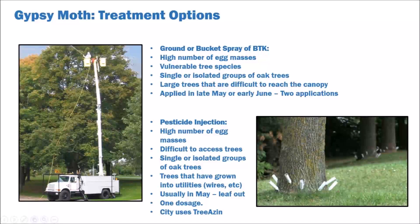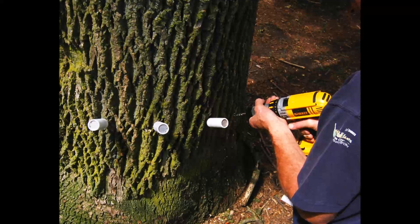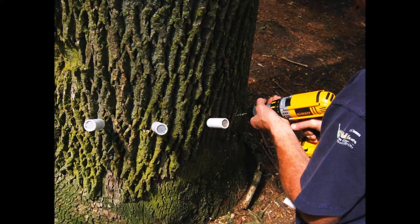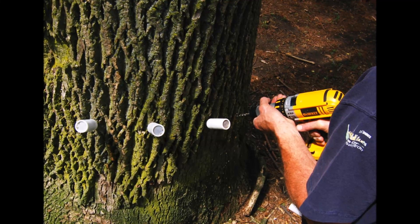Pesticide injections are another option available for control of gypsy moth. Timing is critical and also needs to be done by qualified personnel. Injection needs to be done only once in a year, just prior to or during egg hatch. Injection is ideal for difficult to access trees or for isolated trees. Injections are not advisable on a yearly basis since they can cause physical damage from constant drilling. The City of Toronto uses a product known as Triazin for its injections.